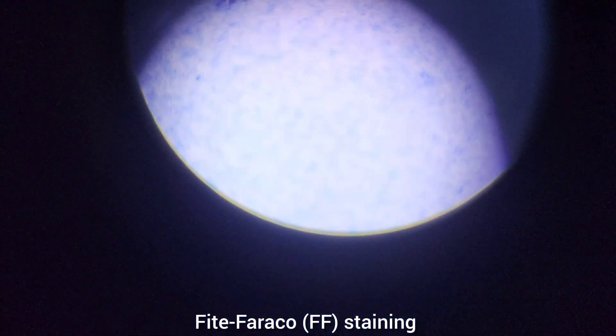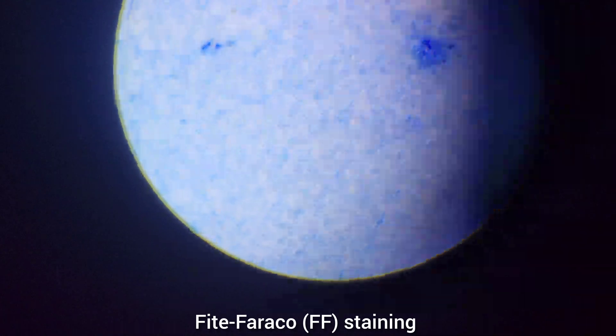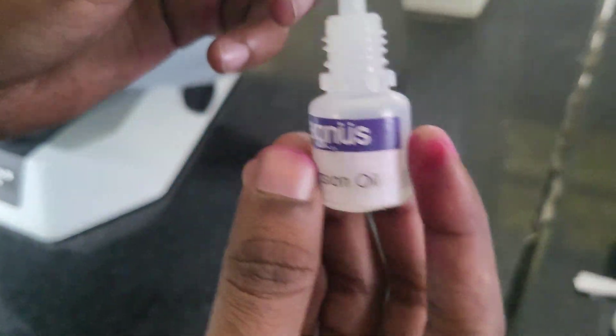What are the modifications of Ziehl staining? Kinyoun's method, a cold version of Ziehl staining, and Gabbet method, modified Ziehl staining used for detecting oocysts of Cryptosporidium and Cyclospora. What causes false negatives in Ziehl staining? Improper specimen collection, thick smears, and excessive decolorization.